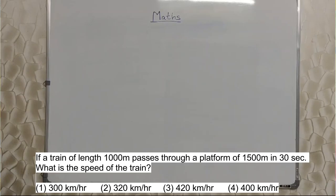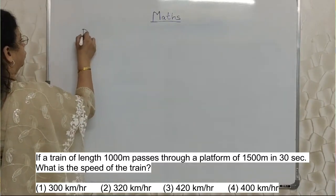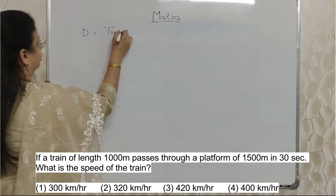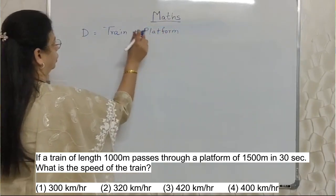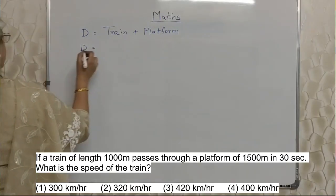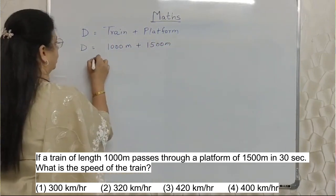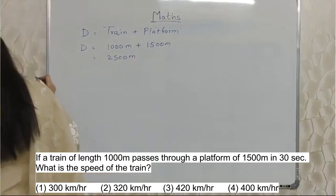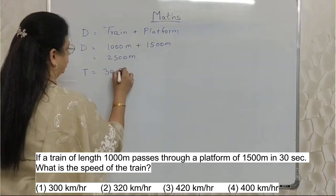If a train of length 1000 m passes through a platform of 1500 m in 30 seconds, what is the speed of the train? Students, wherever a train passes through a platform the total distance is the length of the train plus the length of the platform. Please remember — don't just take the platform or just the train; it is the addition of both. So total distance here is 1000 meters plus 1500 meters, which is 2500 meters. The time required to pass 2500 meters is 30 seconds.